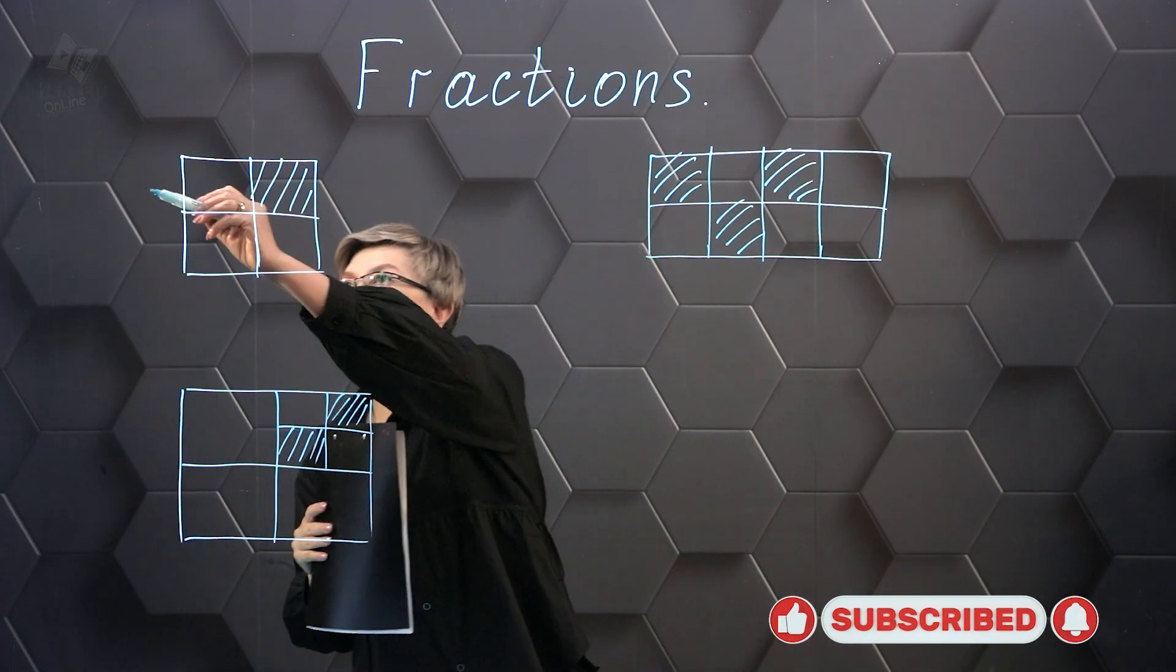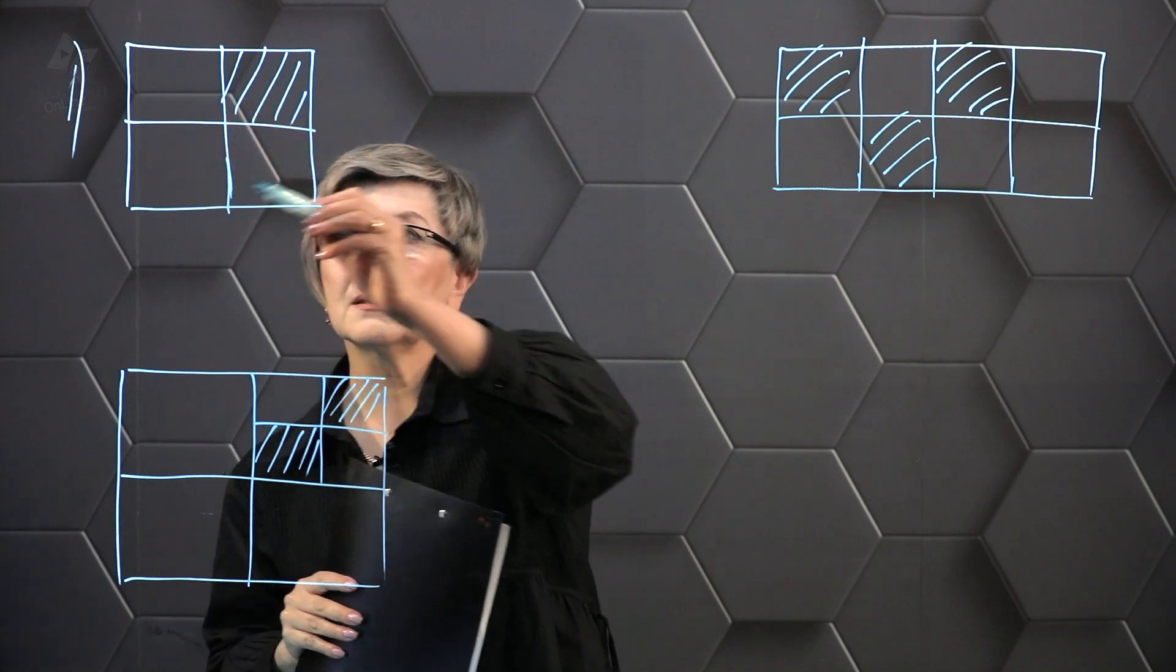First problem, we are given a square, and in this square a part of the square is shaded, and we need to write down what part of the square is shaded. To do this we will use fractional numbers.